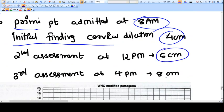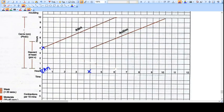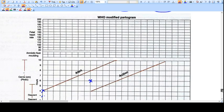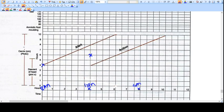After 4 hours you again assessed. Here it will be 4 PM. And at 4 PM you see the cervical dilatation is 8 centimeters. So just put here 8 centimeters.